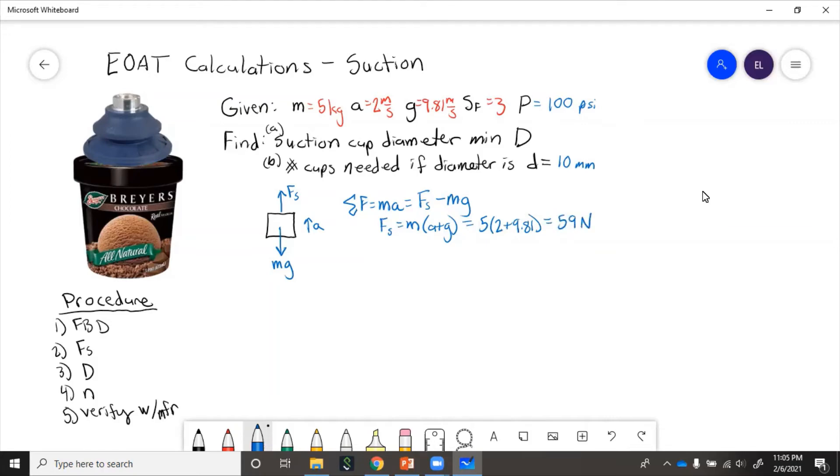But we need to include the safety factor on here and get the final force because the safety factor is 3. But now this force is actually not something that we directly measure because what we're given in the problem is pressure. So to find the diameter of the cup, we need to get the pressure times the area, which equals the force.